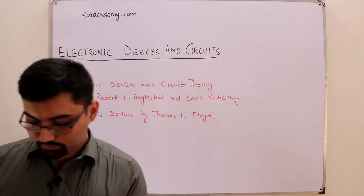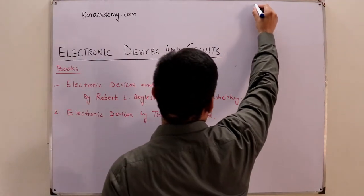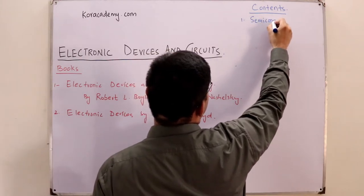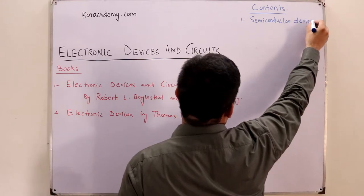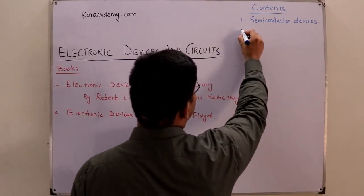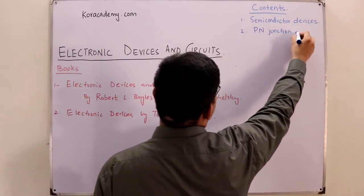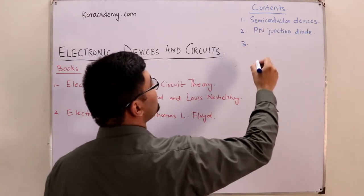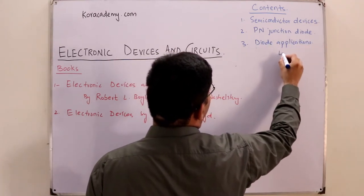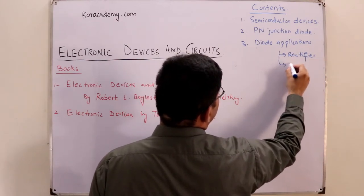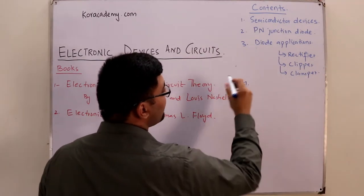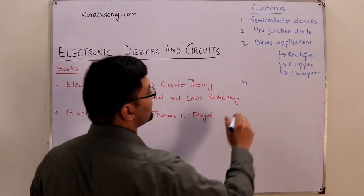Now let's talk about the contents of this course. Number first is we would be starting with semiconductor devices or semiconductor physics. Then out of the semiconductor devices we would make a PN junction diode. When we have made a PN junction diode, we would study some diode applications, and those applications include rectifier circuits, clipper circuits, clamper circuits, etc.